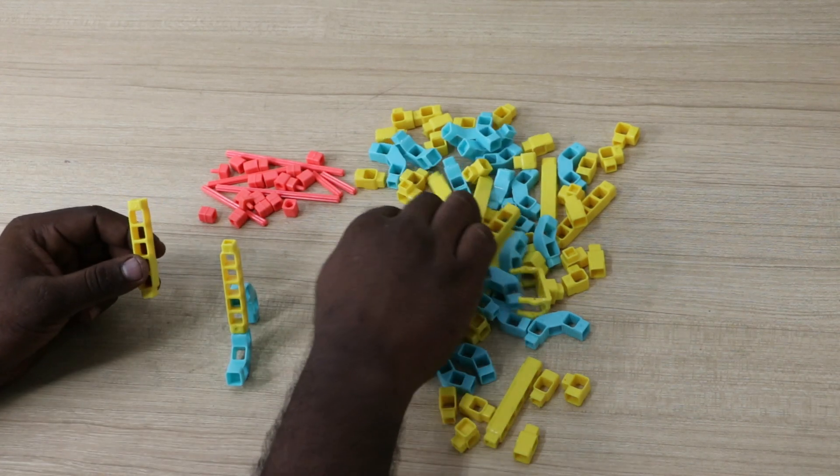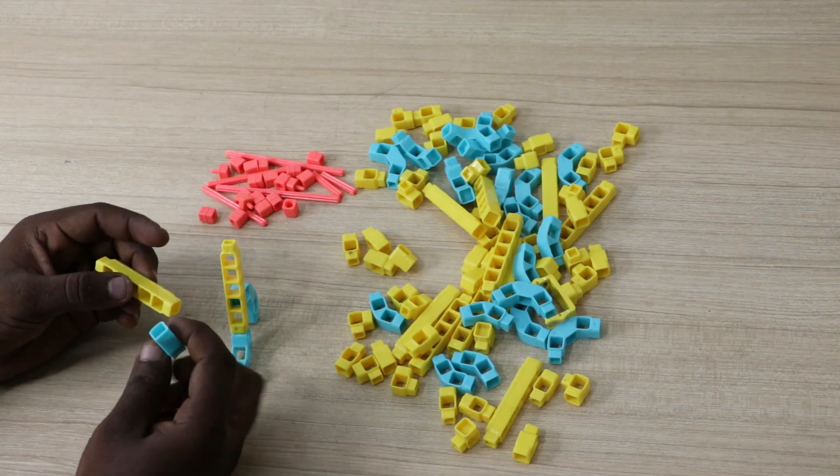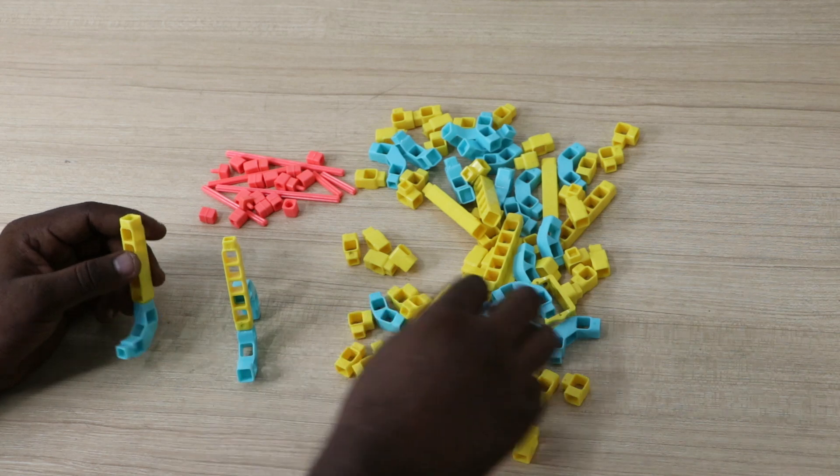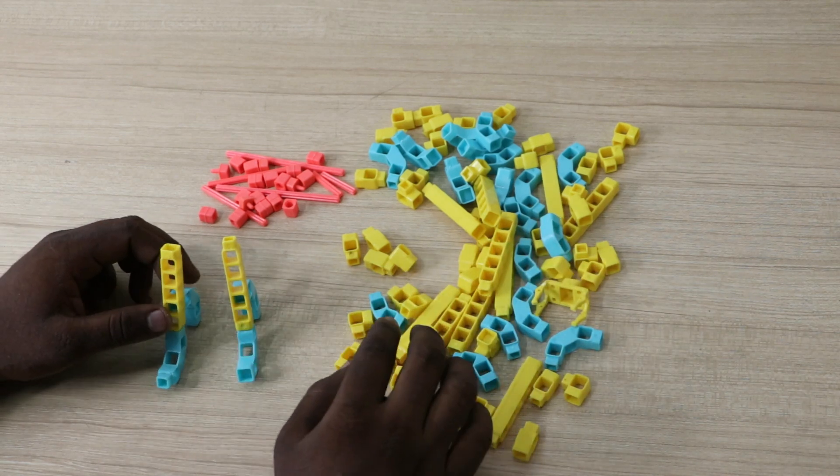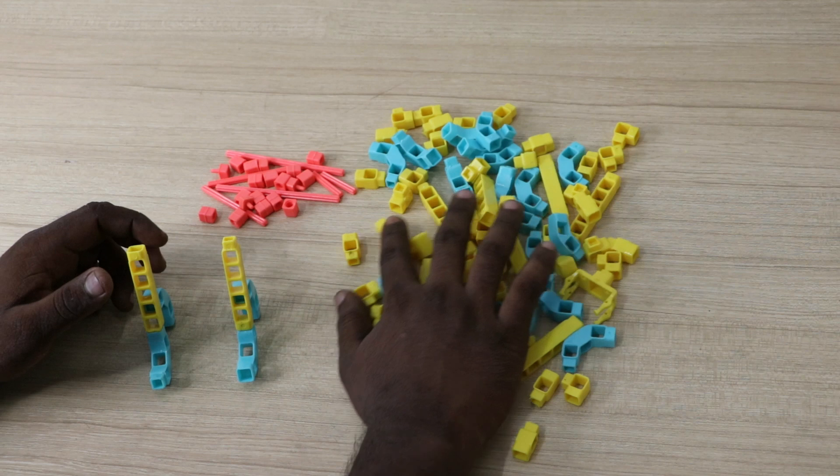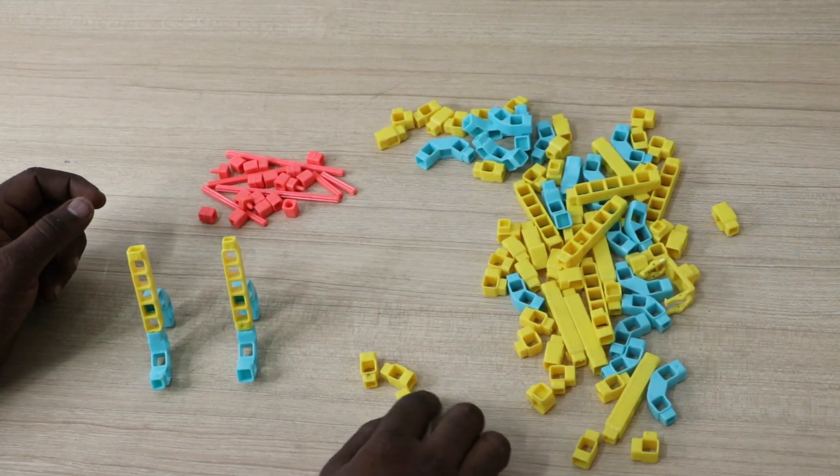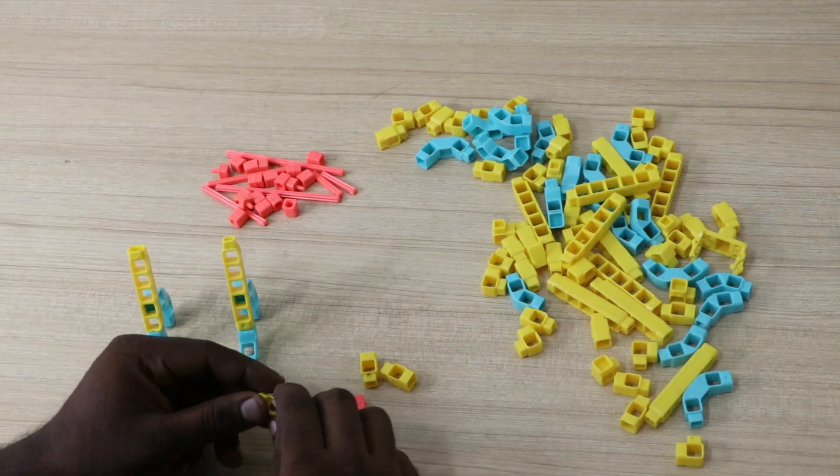Then repeat the step to make another structure like these. Then take 3-1-hole beam and 1 male-to-male coupler and join them as shown.